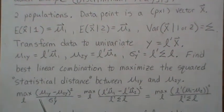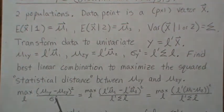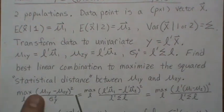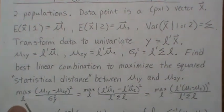But here, this is, we're looking at the statistical distance between the two populations. So here's the two mean vectors, and we're dividing by the common variance associated with those. And we want to maximize this over all possible linear combinations.